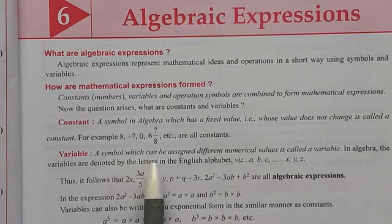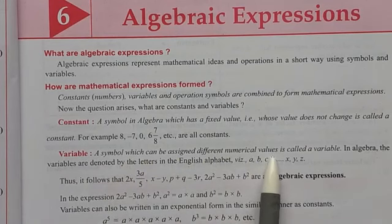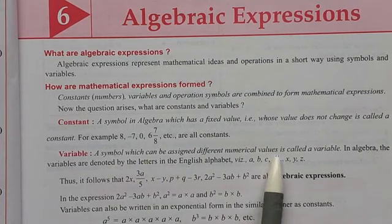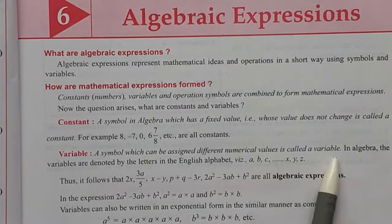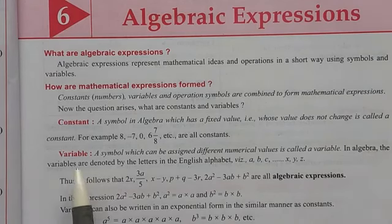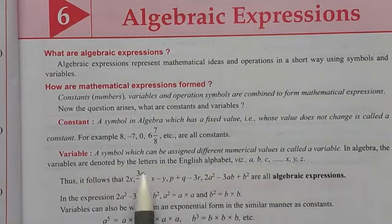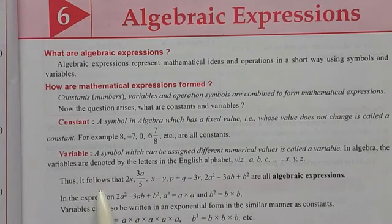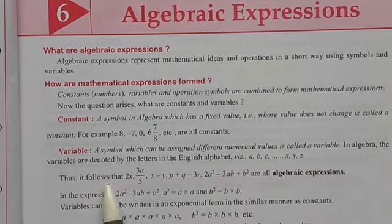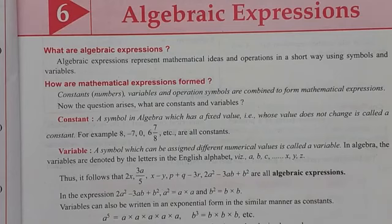A variable is a symbol which can be assigned different numerical values — some of the values change. We call them variables. In algebra, to denote variables we use English alphabet small letters. For example, 2x or 3a upon 5 — these all are algebraic expressions.